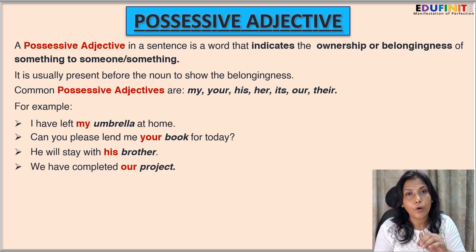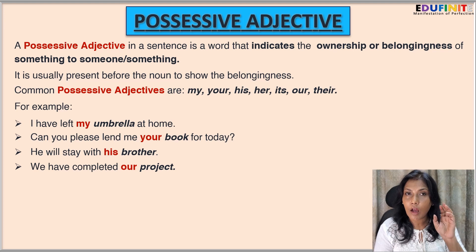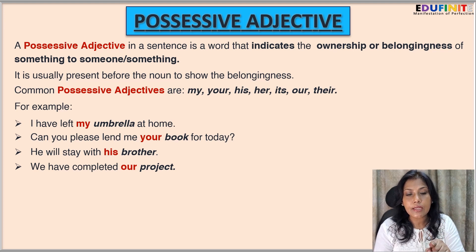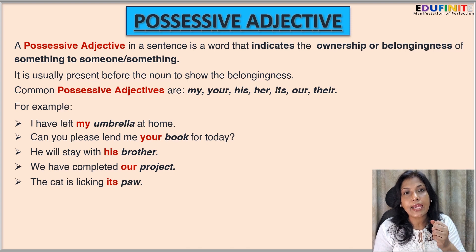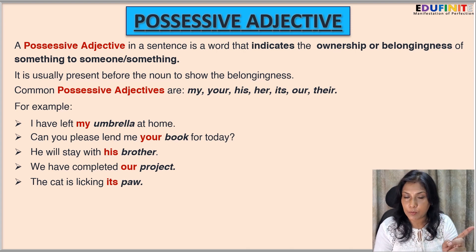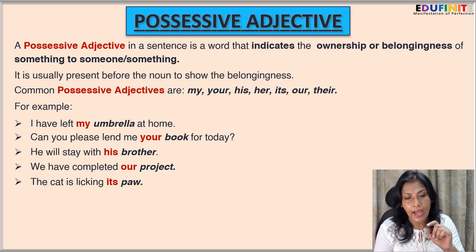'We have completed our project.' Here 'project' is the noun and 'our' is the possessive adjective indicating the project belongs to us. 'The cat is licking its paw.' Here 'its' is the possessive adjective because it is followed by the noun 'paw.' 'Its paw' means the cat's paw — it's telling us about the ownership of the noun 'paw,' so 'its' is the possessive adjective.